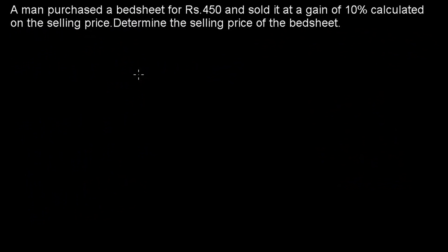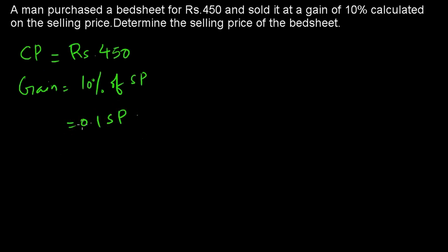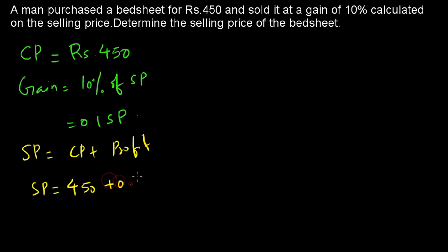Example 3: A man purchased a bedsheet for Rs.450 and sold it at a gain of 10% calculated on the selling price. Find the selling price. CP equals 450, and gain equals 10% of selling price, which is 0.1 SP. Using SP equals cost price plus profit: SP equals 450 plus 0.1 SP.